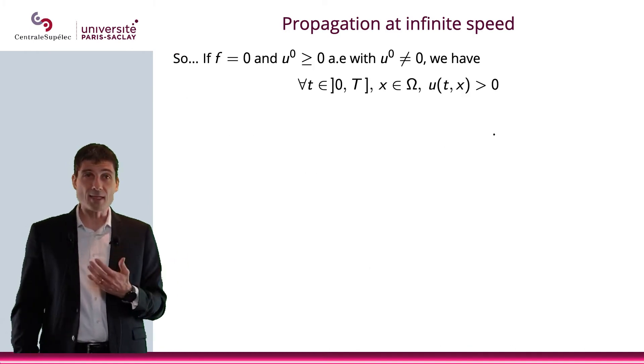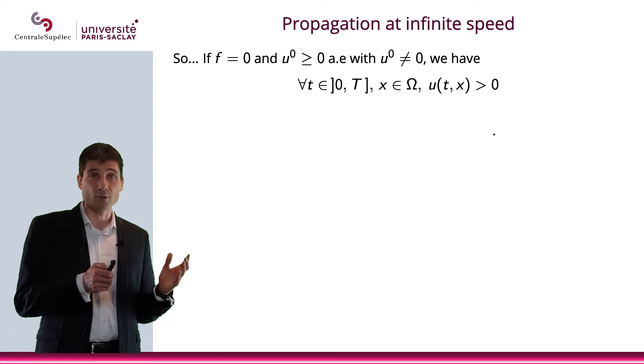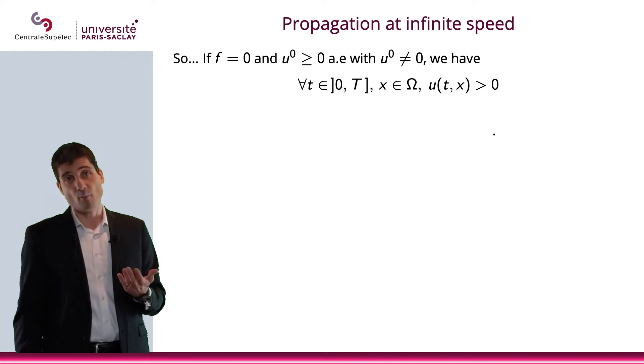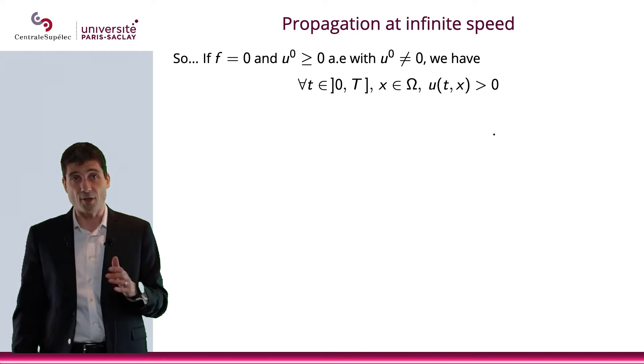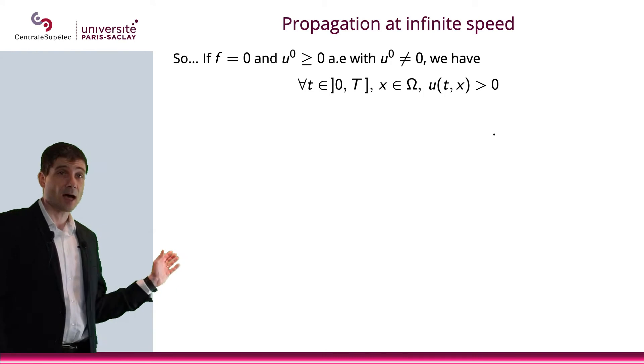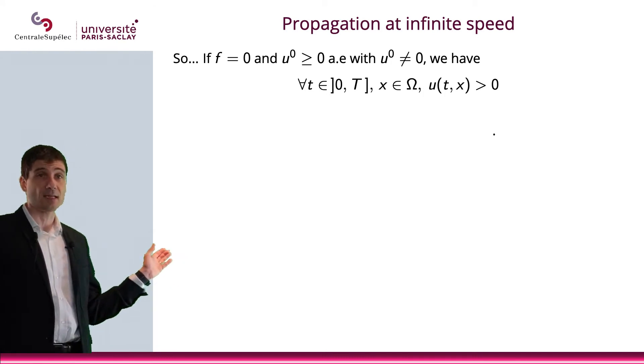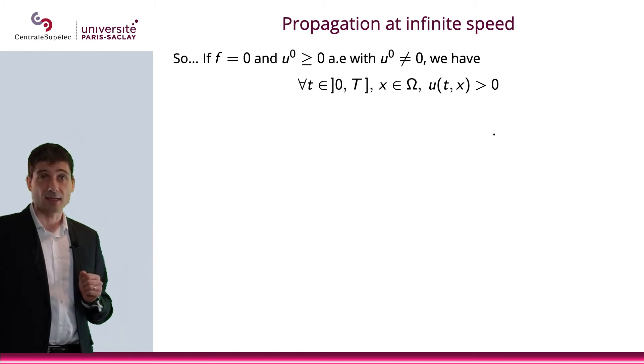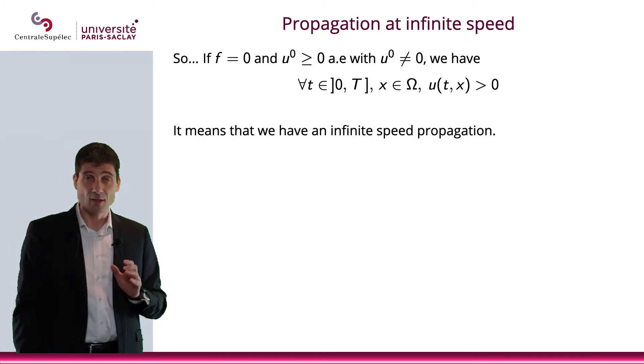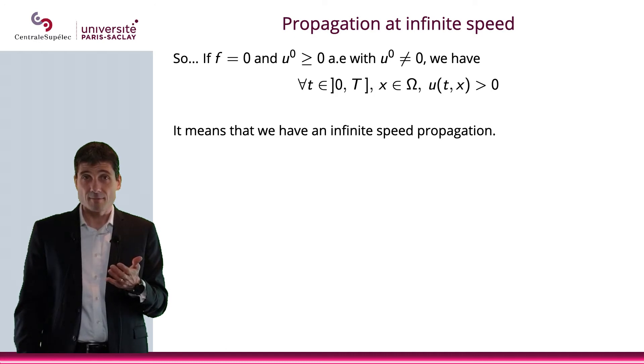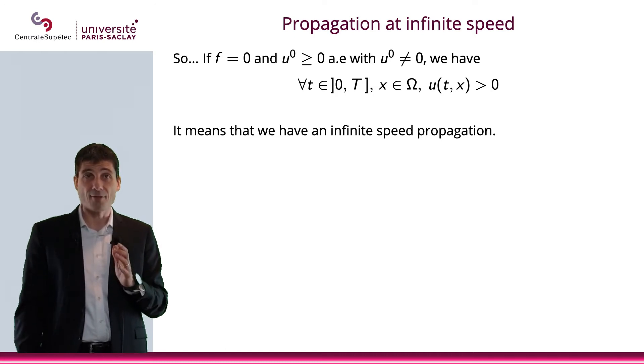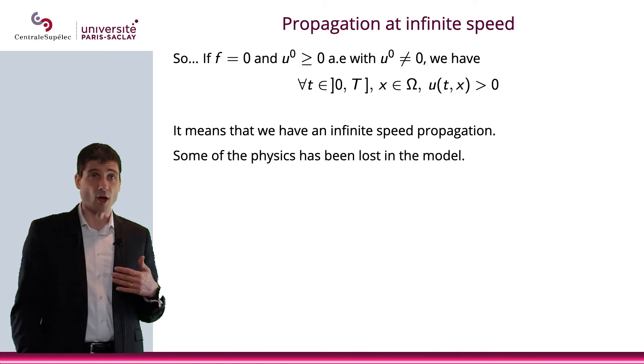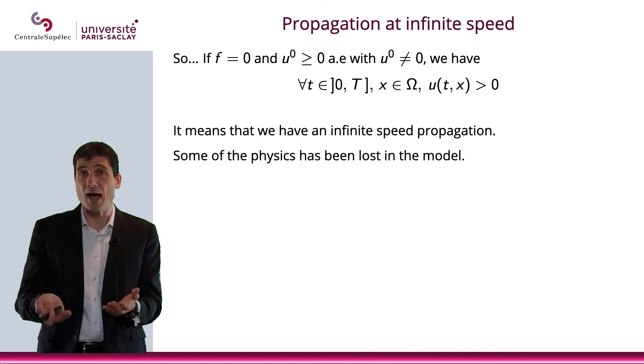Now, what it means is that if F is equal to zero, and U^0 is non-negative almost everywhere but not equal to zero everywhere, what we have is that for all t in ]0,T[, and for all x in Ω, u(t,x) is positive. Which means that we have an infinite speed propagation, which obviously is not possible physically.